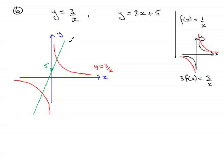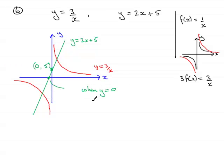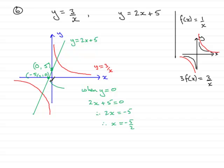We're asked to find the coordinates where each graph crosses the x and y axes. For the straight line, the y-intercept is the coordinate (0, 5). For the x-intercept, we set y equal to 0: 2x plus 5 equals 0, so 2x equals negative 5, giving x equals minus 5 over 2. So the coordinate where the straight line crosses the x-axis is (−5/2, 0).